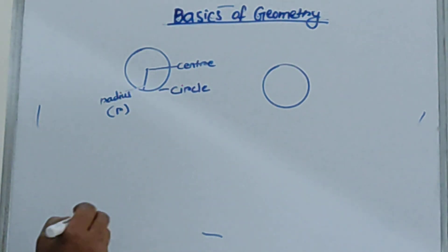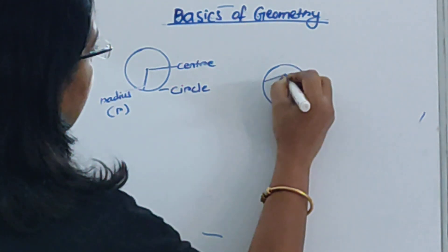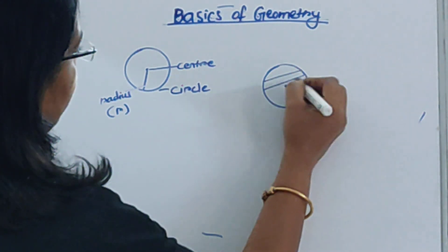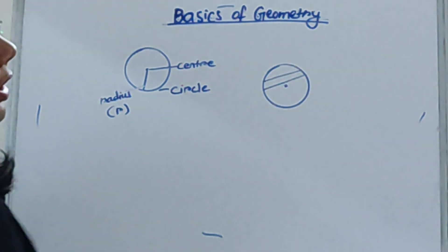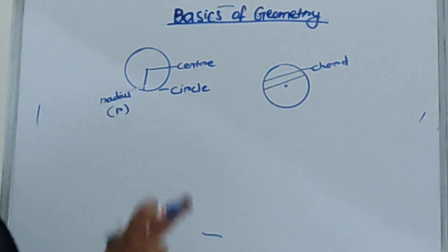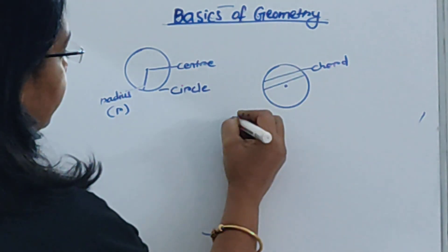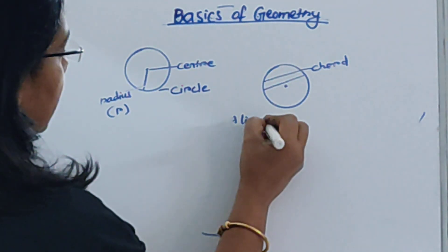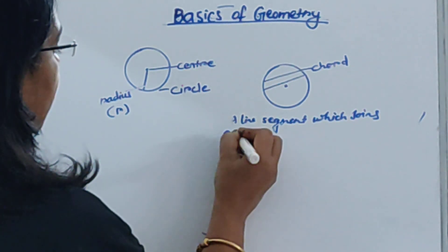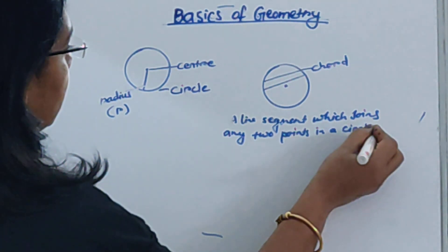Now here is the center point. I am drawing a line from one point on the circle to another point on the circle. This line segment is called a chord. A chord is a line segment which joins any two points on a circle.